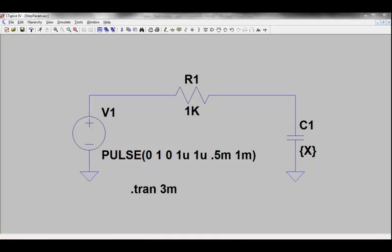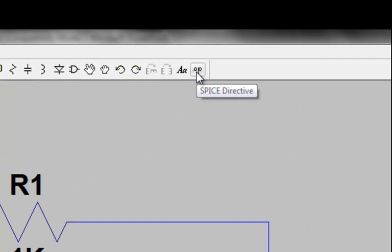The next step is to insert a dot step command via a spice directive that specifies the steps for the parameter x either by linear, logarithmic, or list of values. To insert a dot step command to our schematic, we will need to do so via a spice directive.